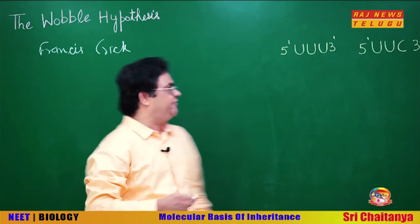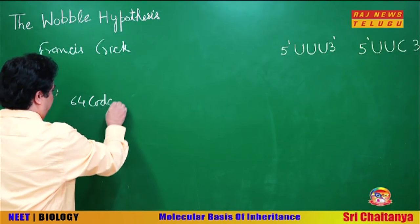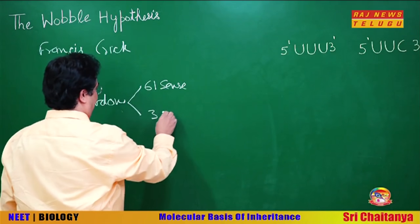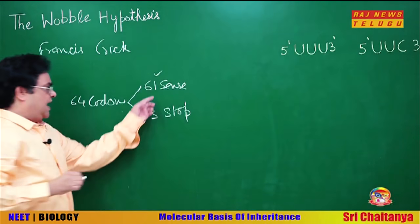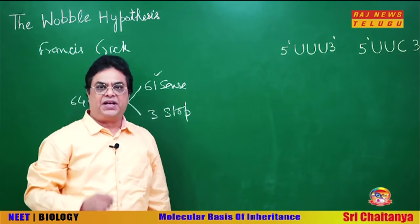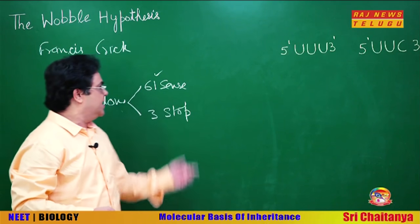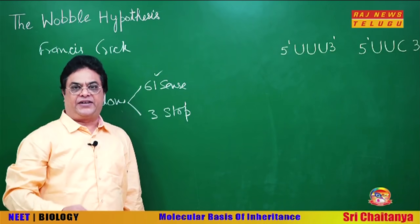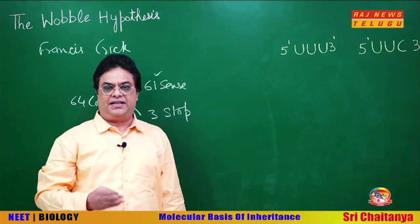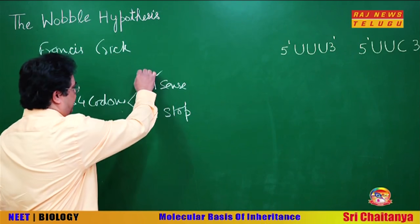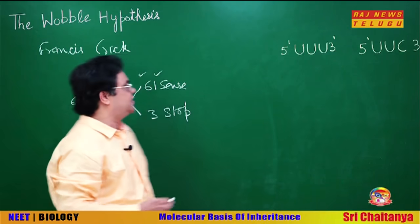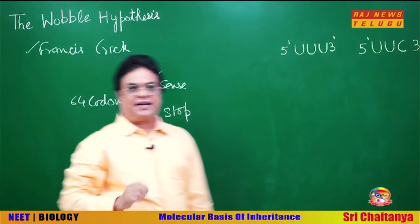While studying the genetic code, we said there are 64 codons — 61 are sense codons and 3 are stop codons. Each sense codon is decoded by a tRNA, so if there are 61 sense codons there should be 61 different types of tRNA. But it was found that the number of tRNA types was less than 61, so the problem arose: how are all 61 sense codons decoded?